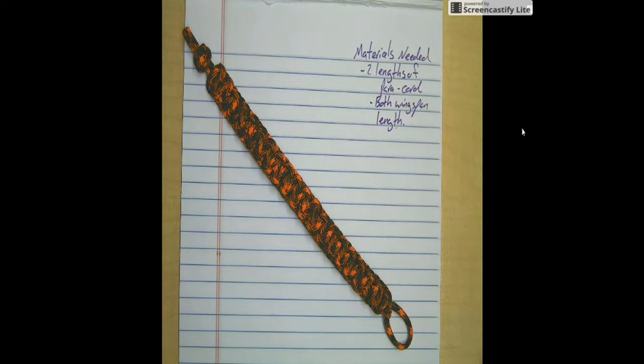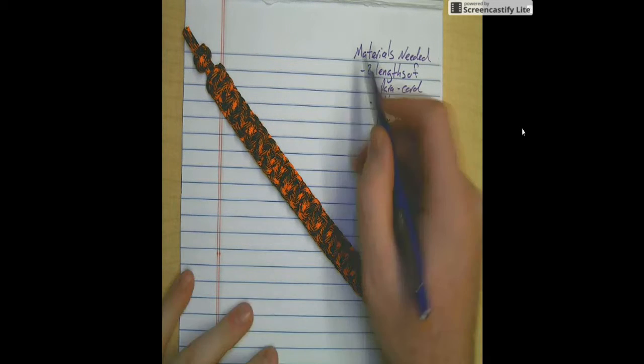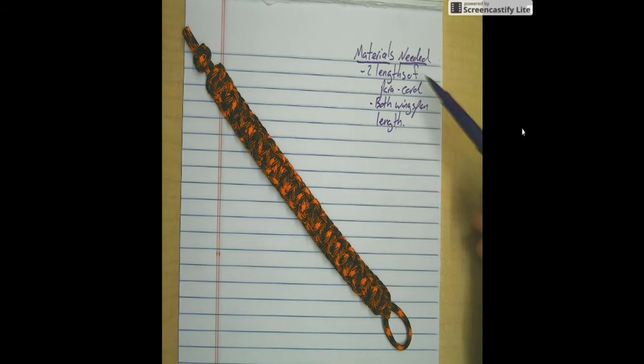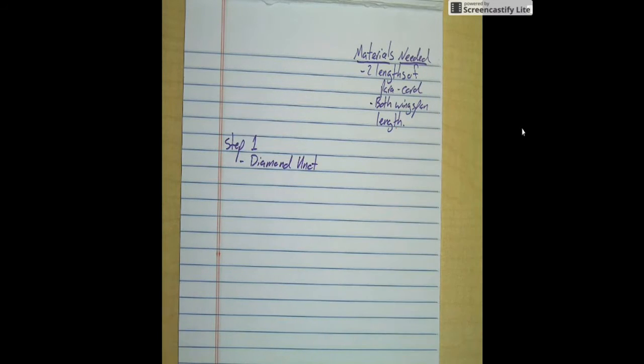Survival bracelets can get pretty complicated. The materials we're going to need this time around to be self-sufficient are going to be two lengths of paracord, both wingspan in length.